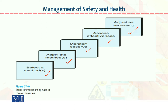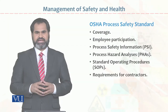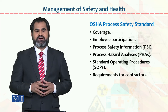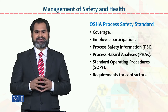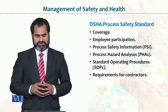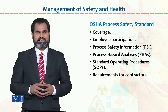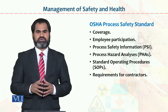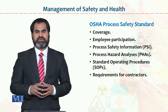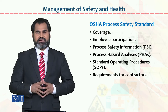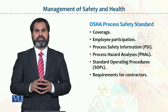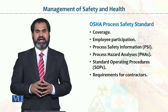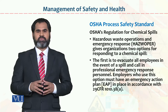इन standards को follow करके आप काफी हद तक hazards को control कर सकते हैं — for example, employee participation, process safety information, process hazard analysis, standard operating procedures, and requirements for contractors. इन सब चीजों को follow करने से health and safety measures का basis बनेगा। In standards को अगर आप google करें तो बहुत detail available है। Occupational Safety and Health Association की मदद से अपने standards apply करने के बाद hazards को control कर सकते हैं।